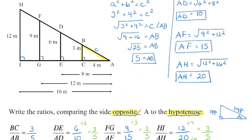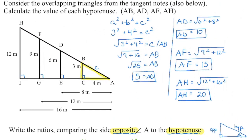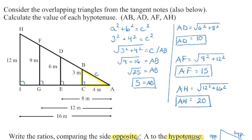For the first ratio, the length of BC is the height of my small triangle, which is three. AB is the hypotenuse, calculated as five. For the second triangle, DE is six meters and AD is ten. We continued for the two remaining triangles. Similar to yesterday, all four of those happen to be equivalent ratios because those triangles are similar. Any triangle with a given angle will have the same ratio when we divide the side opposite by the hypotenuse.